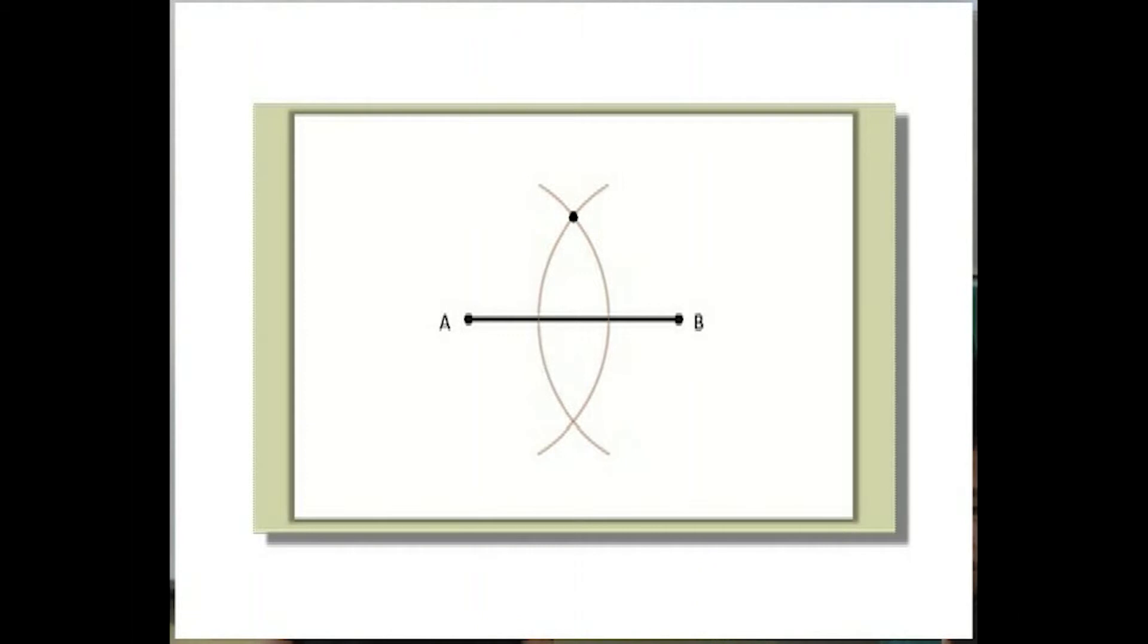Let's label the intersection of the two arcs as P and Q. We then draw a line passing through points P and Q. Let's label the intersection of AB and PQ as D.